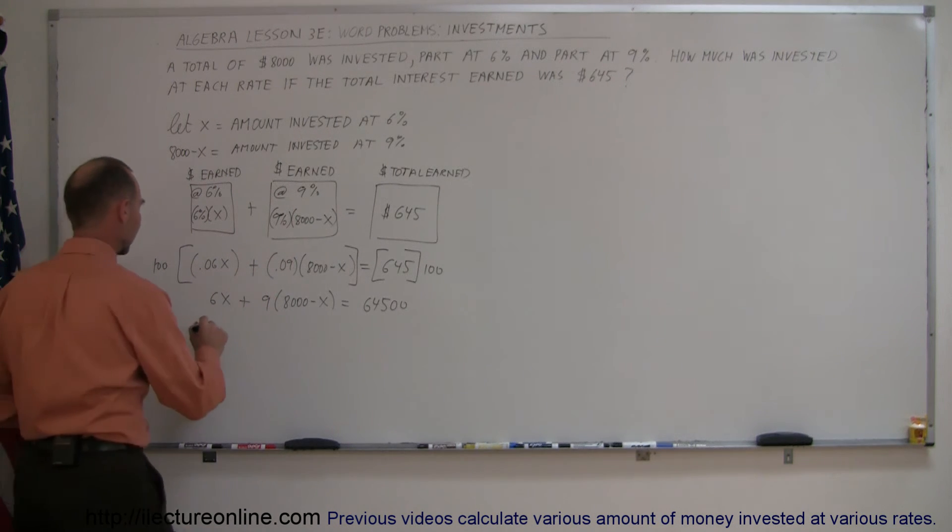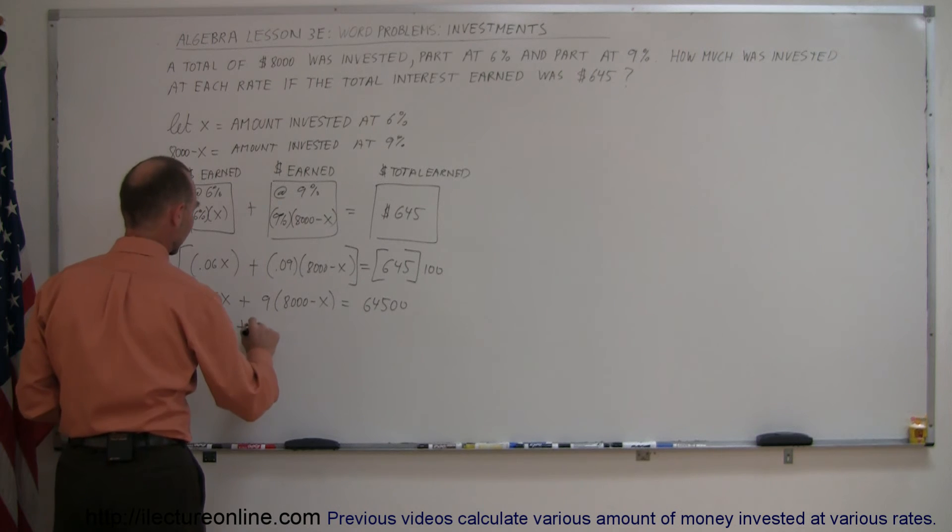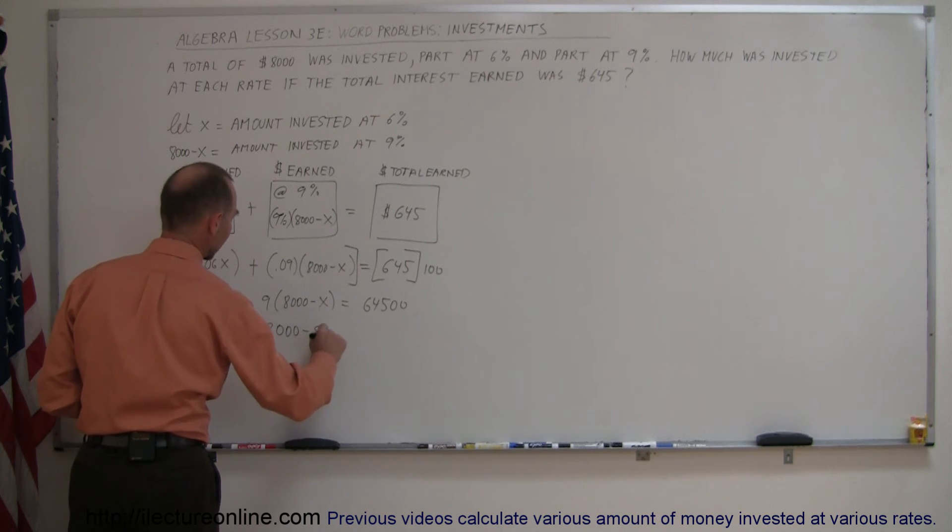Simply add two zeros when you multiply by 100. Get rid of the parentheses. 6X plus 72,000 minus 9X equals 64,500.